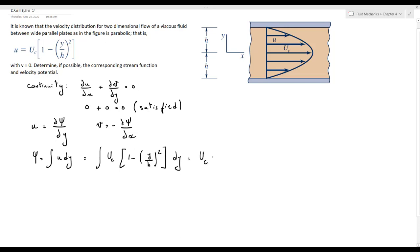So it is uc into y minus y cubed over 3h squared, of course plus a function of x, since we have partially integrated with respect to y.